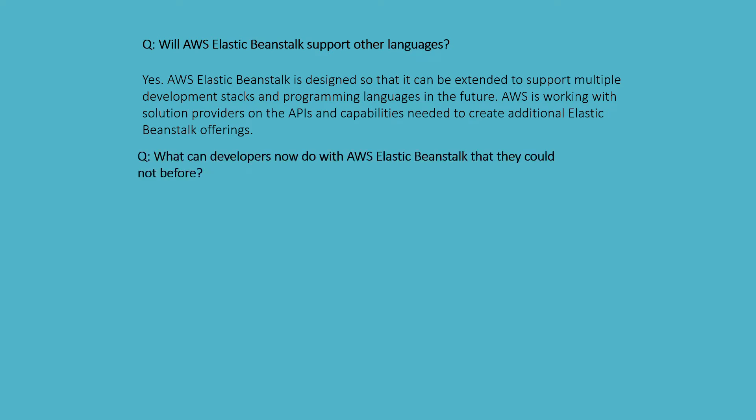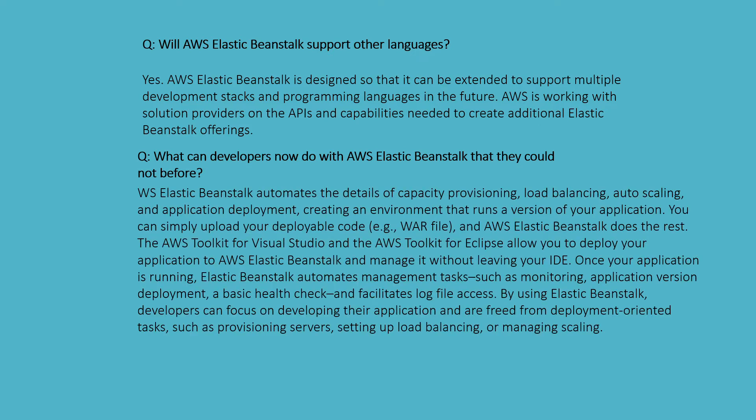What can developers do with AWS Elastic Beanstalk that they could not before? AWS Elastic Beanstalk automates the details of capacity provisioning, load balancing, auto-scaling, and application deployment, creating environments that run a version of your applications. You can simply upload your deployment code via a WAR file, and AWS Elastic Beanstalk does the rest.